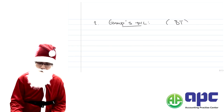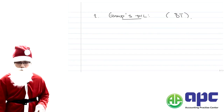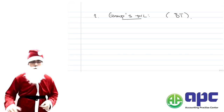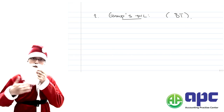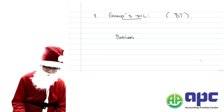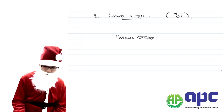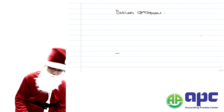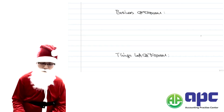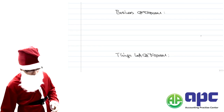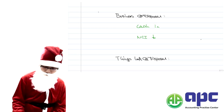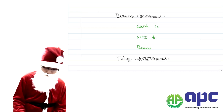For the group's P&L, we use the mnemonic BT. It's very important to lay out the BT pro forma in your exam first before slotting the numbers in. B stands for Business at the disposal date, and T stands for Things left at the disposal date. The Business side includes: the cash coming into the company, the NCI reduction, and thirdly any remaining interest retained.